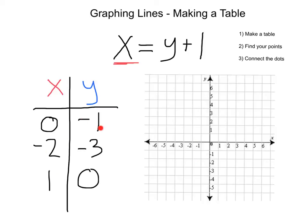Now we've got a set of points here. Let's put them on the graph. First we've got zero, negative one. Then we've got negative two, negative three. And last we have one, zero. And there we've got all three of our points, so lastly let's connect the dots to get our line. Beautiful. So we've graphed the line x equals y plus one right here.